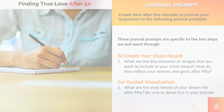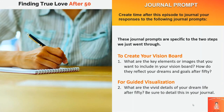To help you integrate what you're learning today, I'm now going to guide you through two journal prompts. Create some time after this episode to journal your responses. These prompts are specific to the two steps we just went through. For your vision board: what are the key elements or images that you want to include? How do they reflect your dreams and goals after 50? For guided visualization: what are the vivid details of your dream life after 50? Be sure to detail this in your journal.